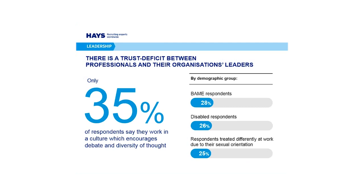This trust deficit was even greater amongst traditionally underrepresented groups — just 28% of Black, Asian and Minority Ethnic respondents, 26% who disclosed a disability, and 25% of those who believed they were treated differently at work due to their sexual orientation stated that they trusted their leaders to deliver change on the D&I agenda.